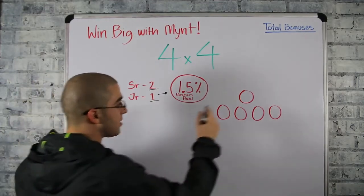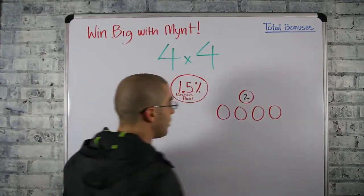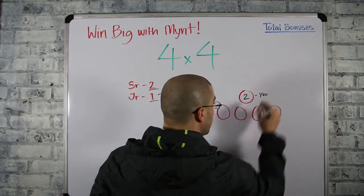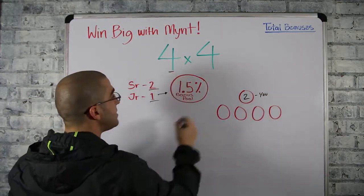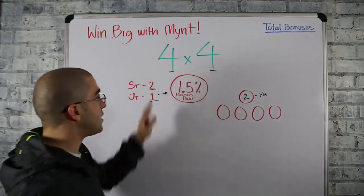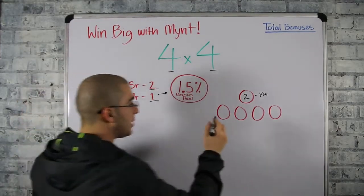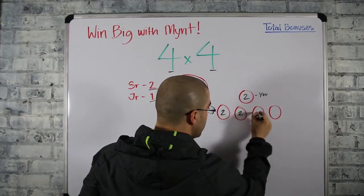So let's say you get started on the senior kit for two points, right? This is you. Your goal is to help four friends in four weeks. This is our four by four program. So you help your four friends each get started on a senior kit.